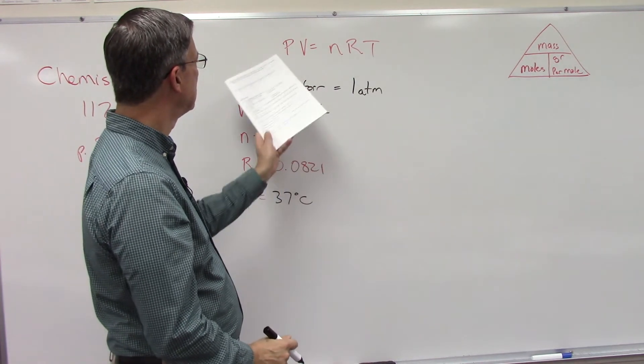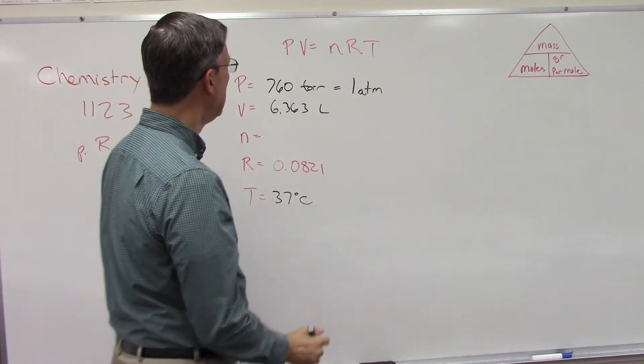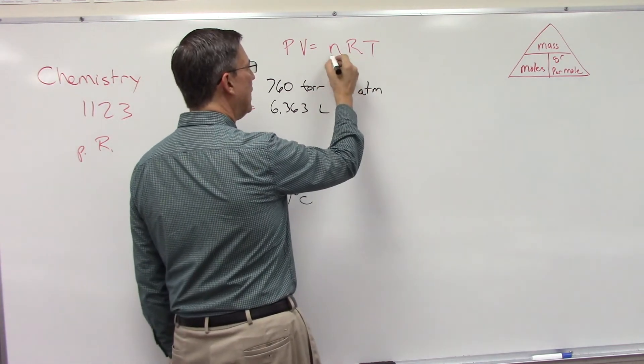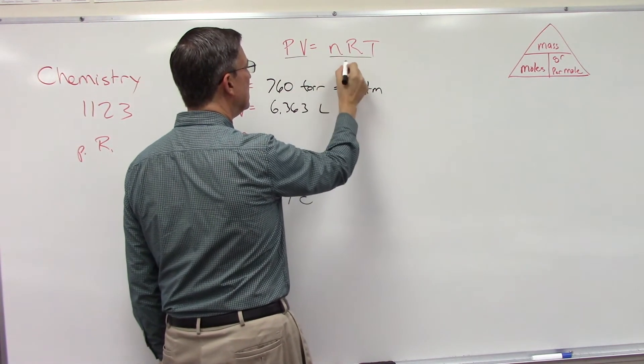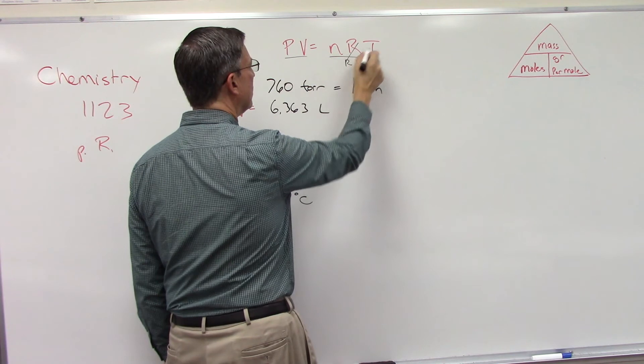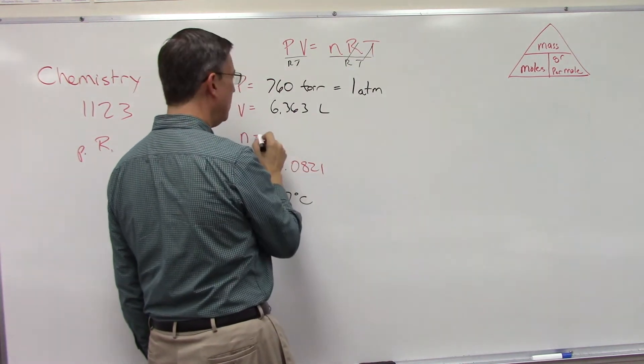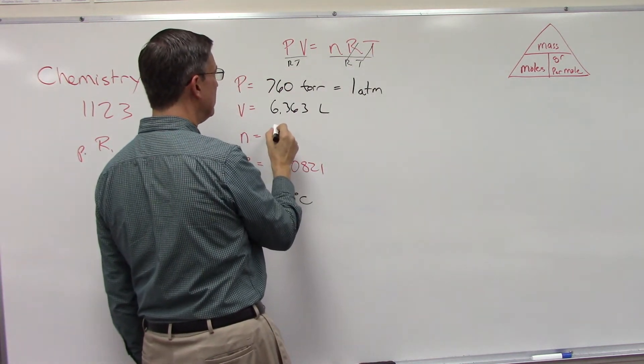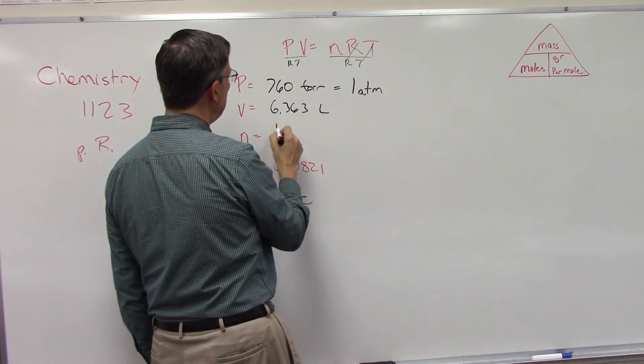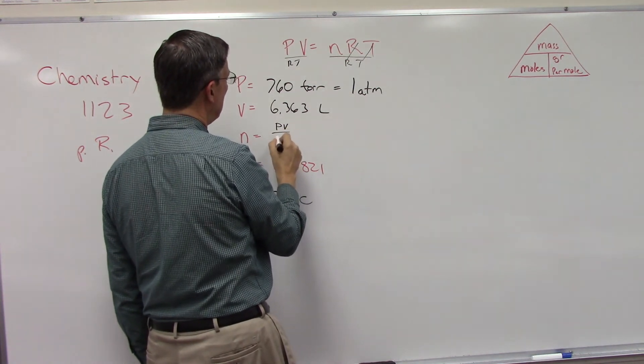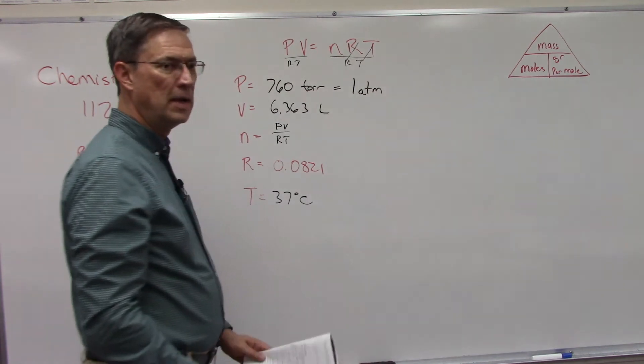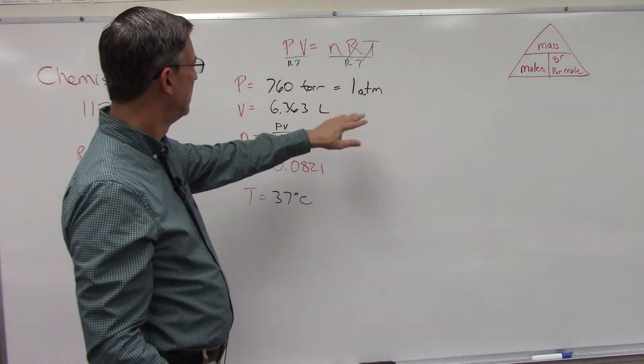Now let's take this formula and solve for n. If we divide both sides by RT, then we'll have the formula n = PV/RT. And then it's just a matter of taking these numbers and the temperature and this value and solve.